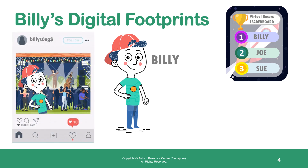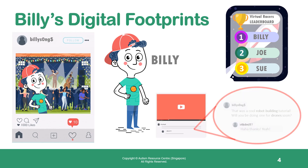Second, Billy posts a photo on his social media account showing him at what seems like a music concert. His photo is liked by 1000 people. This tells us that Billy is also a music fan who is well liked by many people on social media. Third, Billy gives a positive comment on a YouTube video about robot building and drones. This tells us that Billy is interested in robots and drones as well. There are so many things people can learn about someone from just looking at their digital footprints.